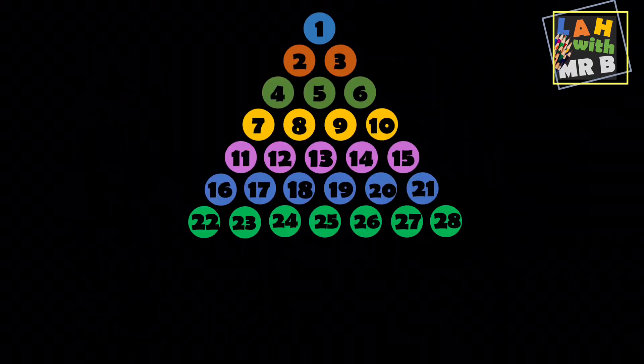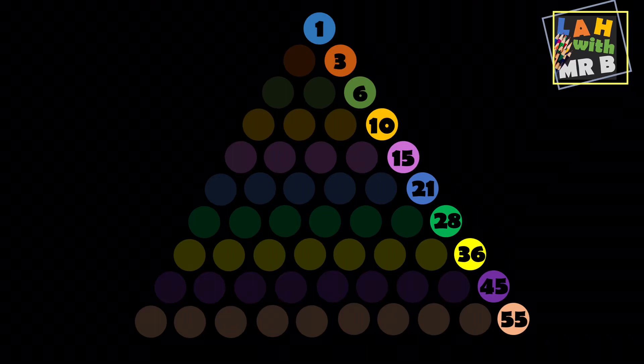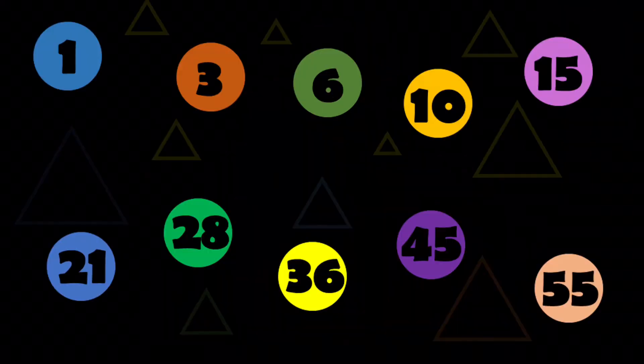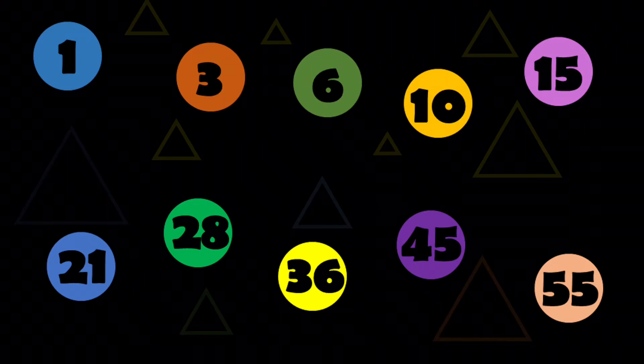We can actually keep building up triangular numbers like this just by adding more and more rows as we go. Here we've found the first ten triangular numbers. We can check that we've got this right by making sure it follows the pattern: plus two, plus three, plus four, and so on, right up until plus ten. The numbers 1, 3, 6, 10, 15, 21, 28, 36, 45, and 55 are the first ten triangular numbers.